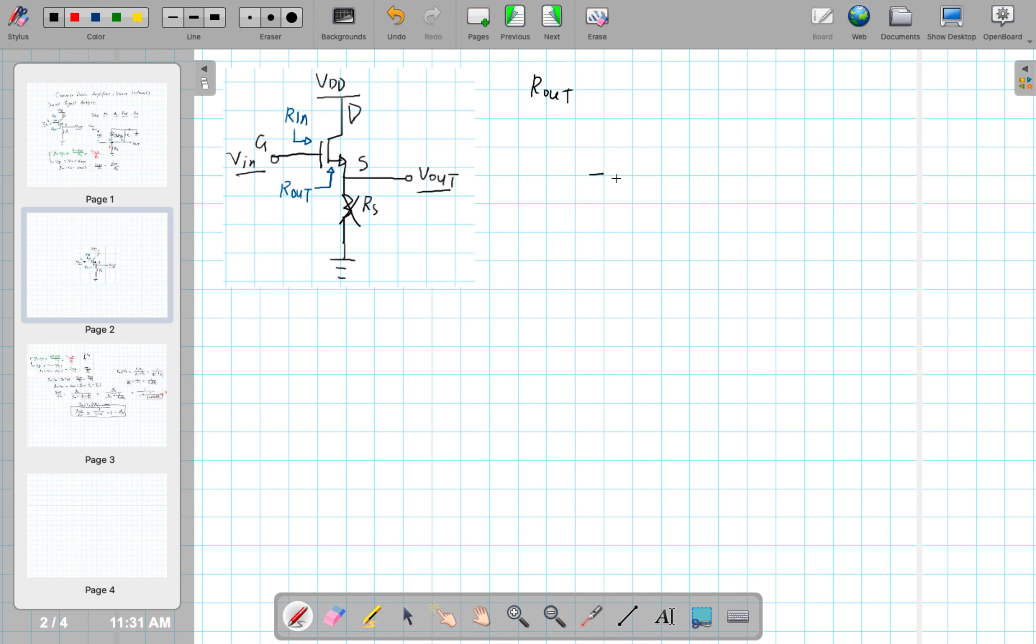In the small signal model again, VGS. This is gm times VGS. And here since the RS doesn't exist, we can simply use an open circuit here. We don't really care about the RS. R0. And the Vout is still here. Vdd goes to the ground.